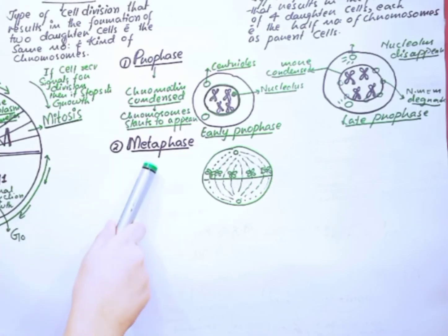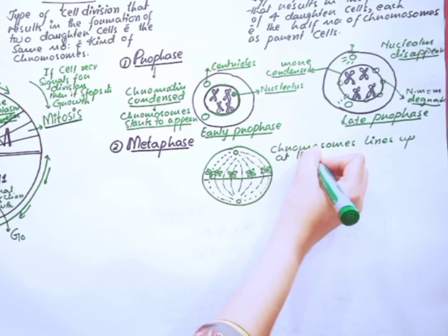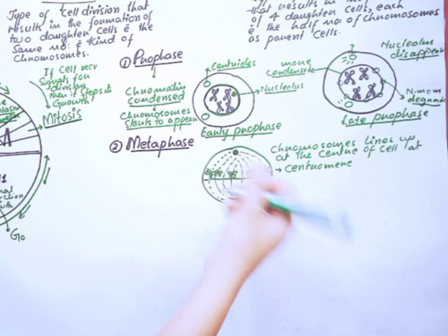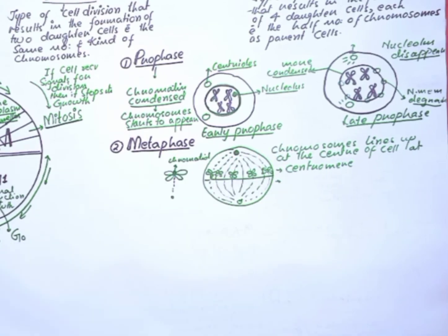Next we have metaphase. The metaphase is the stage in which chromosomes line up at the center of the cell and the spindle fiber which arises from the centrosome attaches to the chromatids.